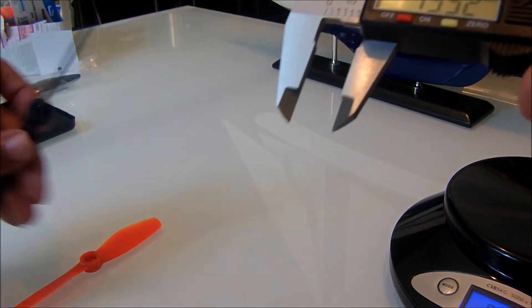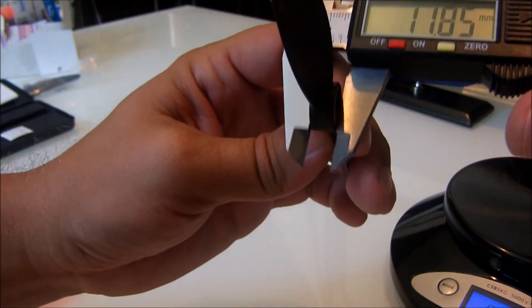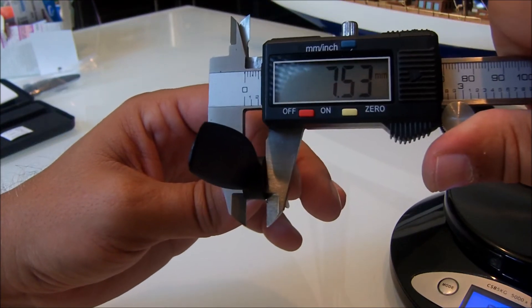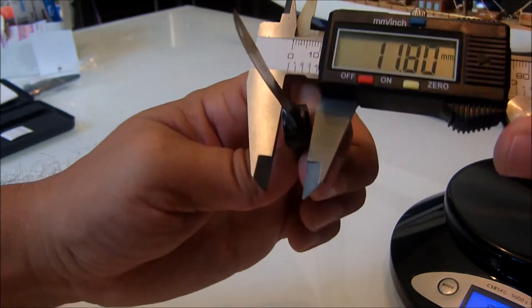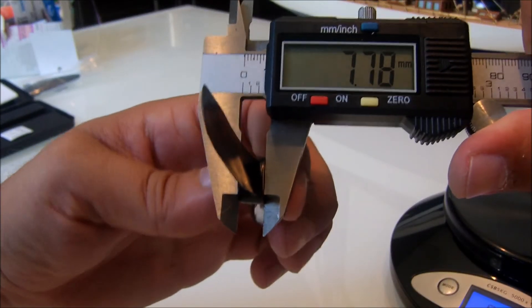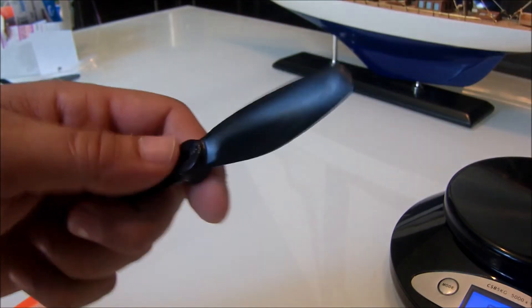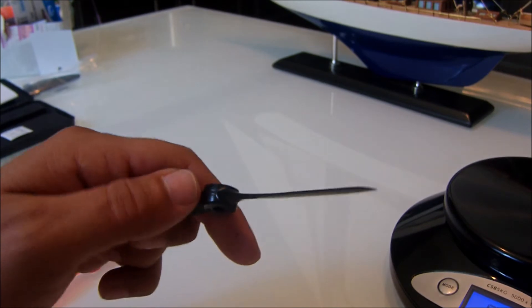Okay, the HQ prop this way is 7.53 millimeters. The Gemfan is 7.76 millimeters. So they're smaller one way and larger the other.